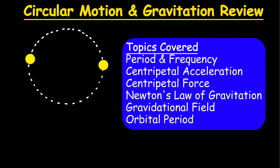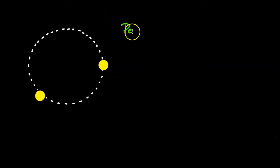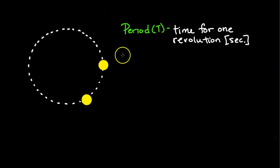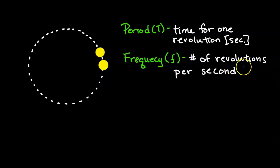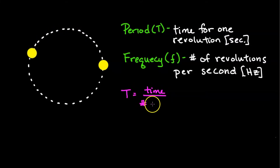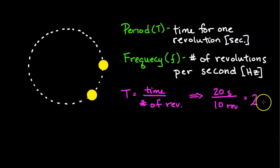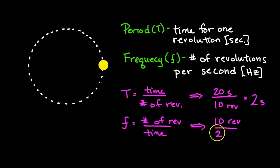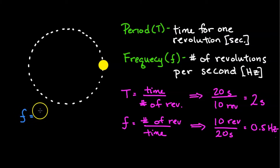When an object is going in a circle, we can measure its period and frequency. Period is the time for one revolution, measured in seconds. Frequency is the number of revolutions per second, measured in hertz. To calculate the period, we take the time divided by the number of revolutions — for example, 20 seconds over 10 revolutions gives a period of 2 seconds. Frequency is revolutions divided by time: 10 divided by 20 gives 0.5 hertz. Period and frequency are inverses of each other.